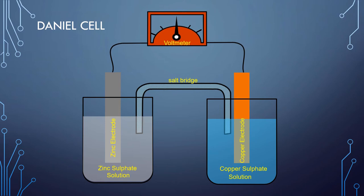The zinc and copper rods are connected through a key and voltmeter. The solutions in the two beakers are connected to each other with the help of a salt bridge.